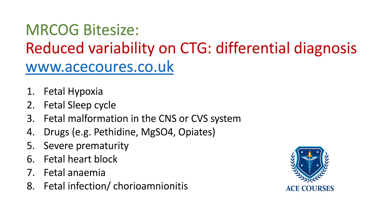So look at the duration for which the baseline variability has been diminished. The third is that it could be a problem with the fetus in terms of malformations in the central nervous system or cardiac system. The fourth is that it could be a drug that we have given, for example pethidine, magnesium sulfate, or opiate analgesics.